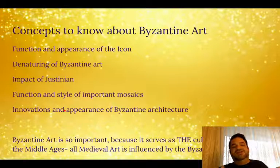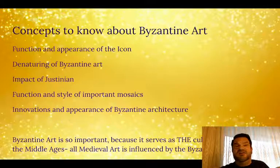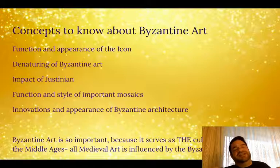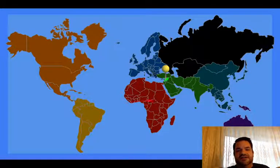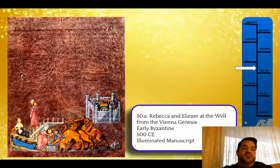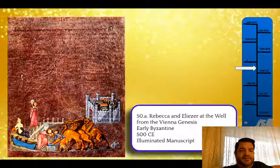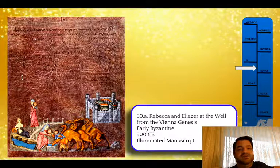Constantinople is going to be the cultural hub of Europe throughout the medieval period. It's really only the fall of Constantinople in 1453 that allows Italy, Florence, and the Renaissance to take its place as that cultural center. We're going to start in the Eastern Byzantine Empire with a manuscript called the Vienna Genesis — Genesis being the first book of the Bible. It's an illuminated manuscript: 'illuminated' meaning it has pictures, 'manuscript' from Latin meaning handwritten — so it's essentially a handwritten picture book.